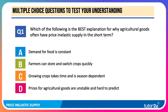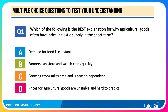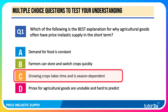Here are some questions to test your understanding. Question one: which of the following is the best explanation for why farm goods often have price inelastic supply in the short term? Press the pause button and have a go. The answer to question one is C: growing crops takes time and is season dependent.